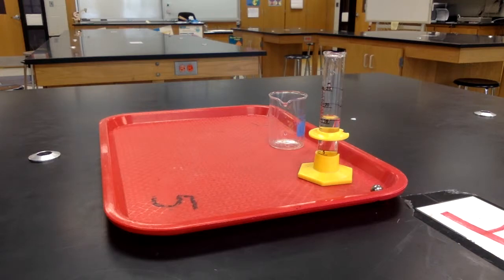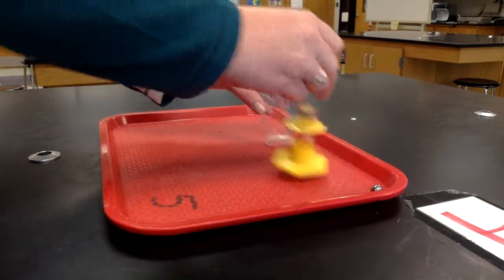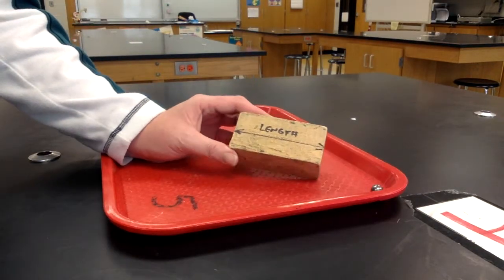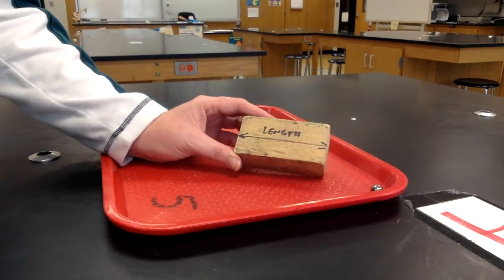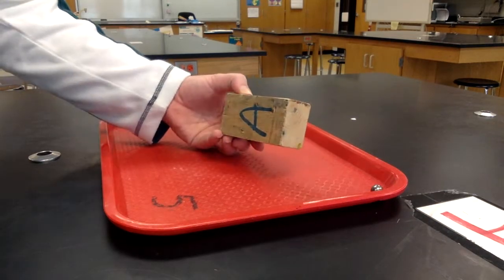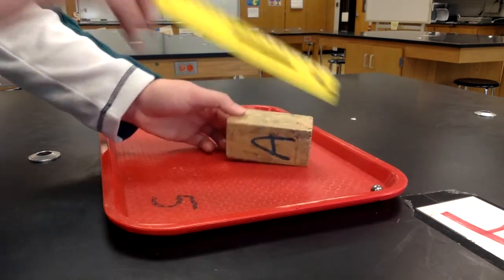To measure the volume of a regular shaped object you need to have a square, rectangular, or cube shaped object. You need to have a ruler.